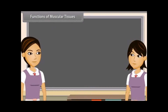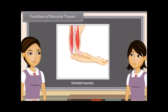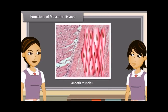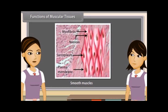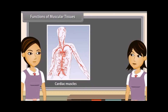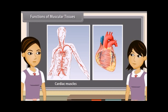Functions of muscular tissues: Striated muscles provide the force for locomotion and all voluntary movements of the body. Smooth muscles are involuntary muscles; movement of food in the alimentary canal and opening and closing of tubes are due to smooth muscles. Cardiac muscles contract and relax rapidly, rhythmically and tirelessly throughout life. This contraction and relaxation helps heart muscles to pump and distribute blood to various parts of the body.